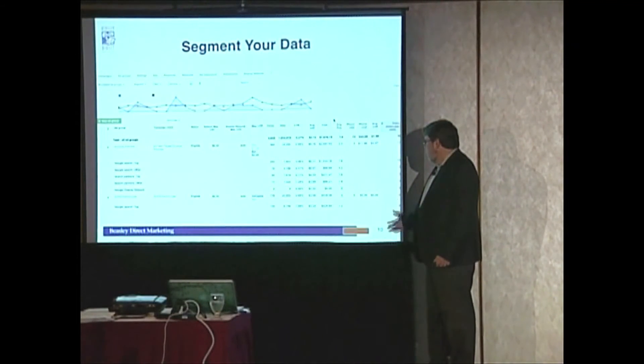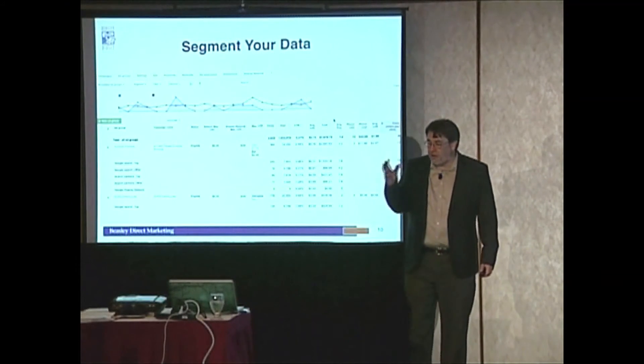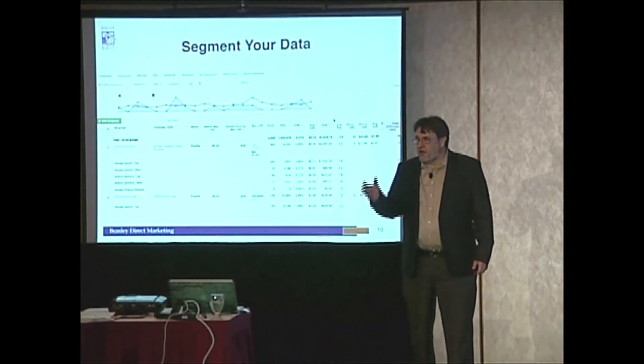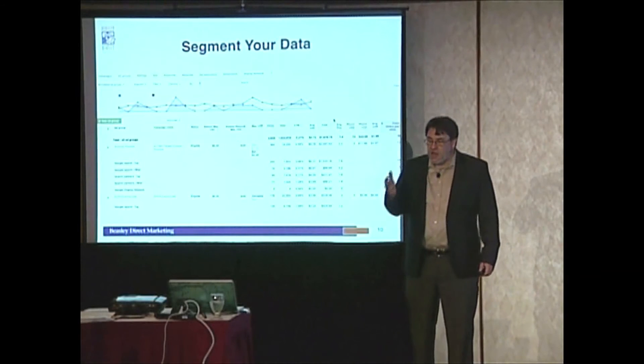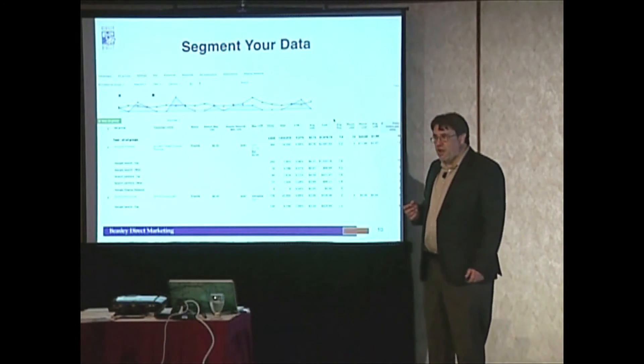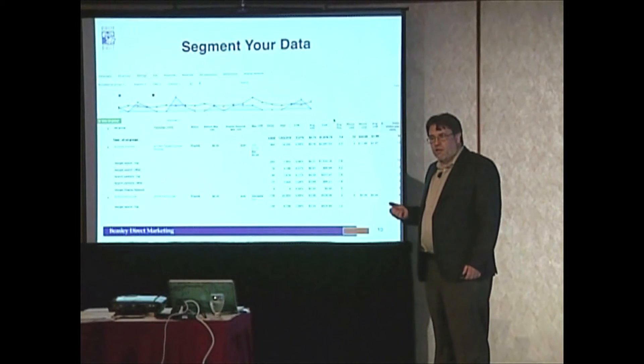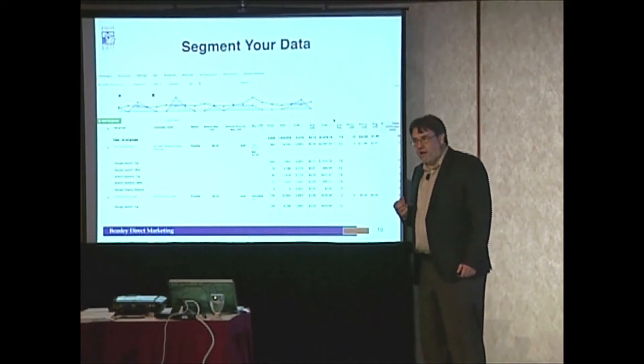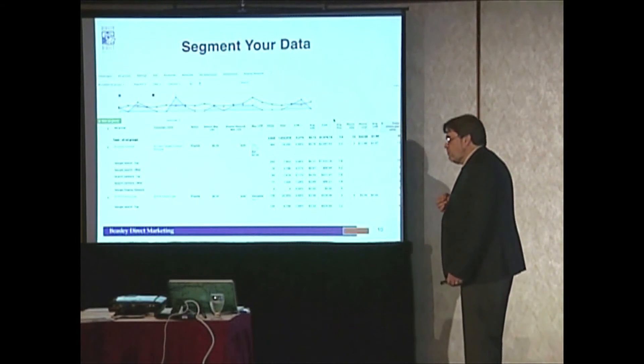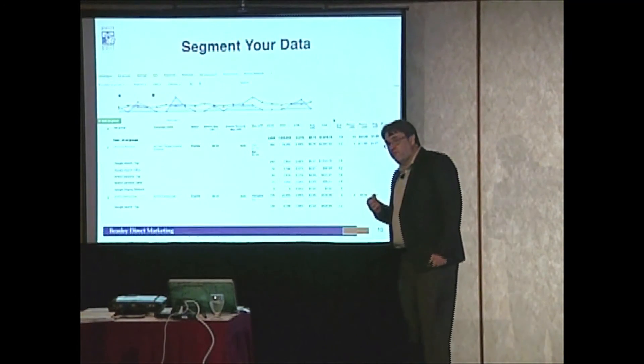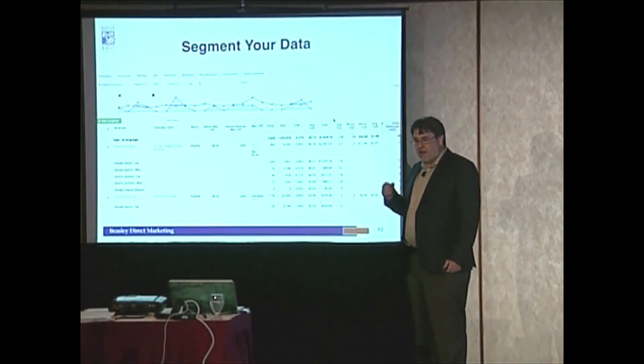We saw we were getting lots of impressions from search partners, but they weren't converting. So we stopped spending money on search partners and spent it all on the top two positions on Google search only. This gave us about a 7% increase in click-through rate and a 4% decrease in cost per conversion. Where conversions were $125-$160, that 4% added up quickly.